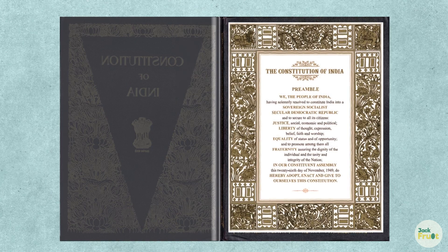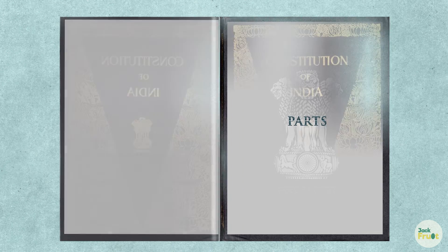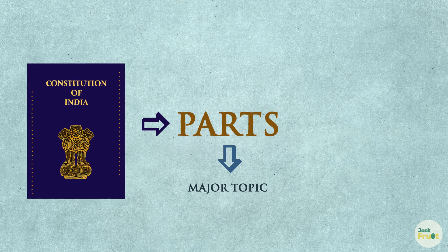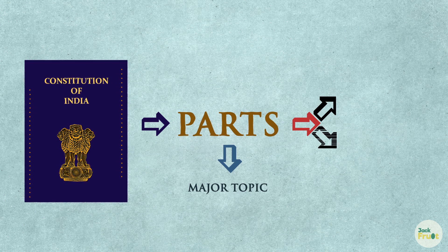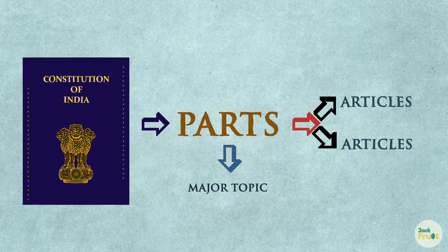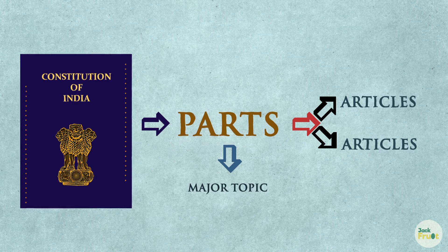After the preamble, the contents of the Constitution of India are divided into parts. Each part deals with a major topic. All the parts are written in fine form called articles. Let's have an overview of some parts of the Constitution and their subject matter.